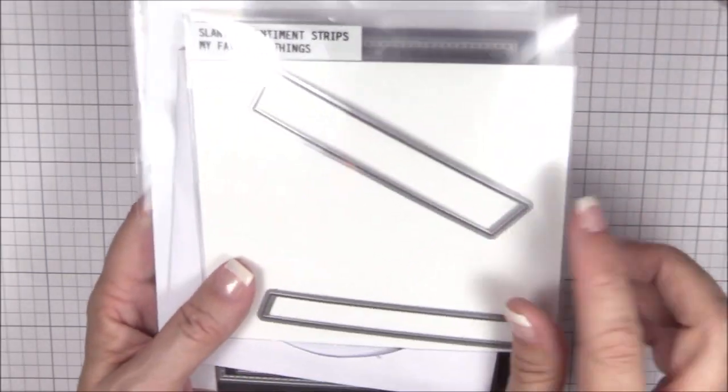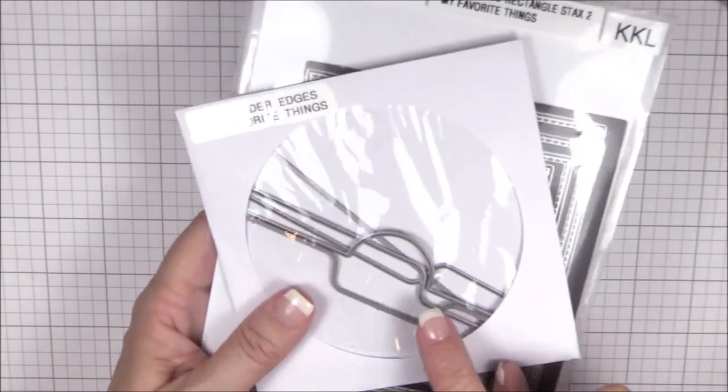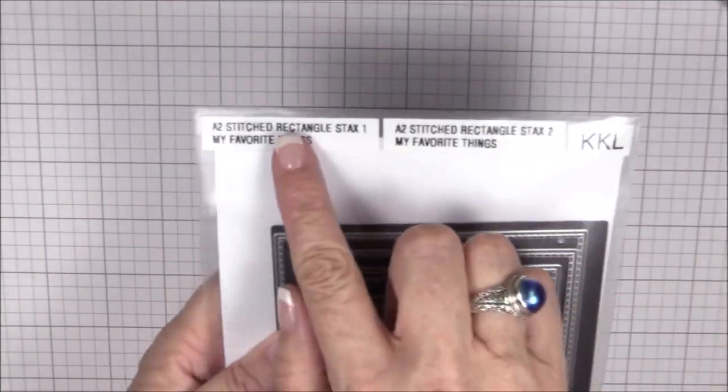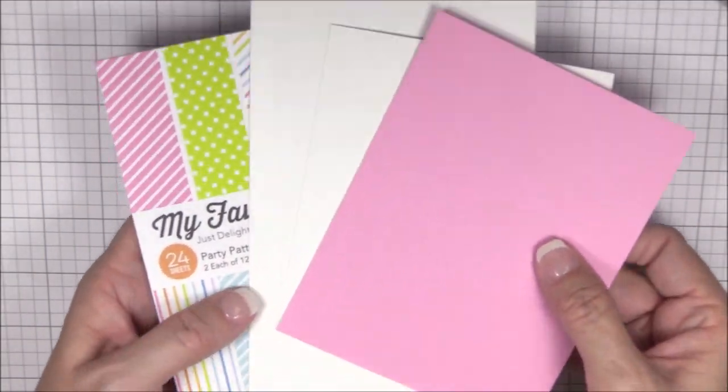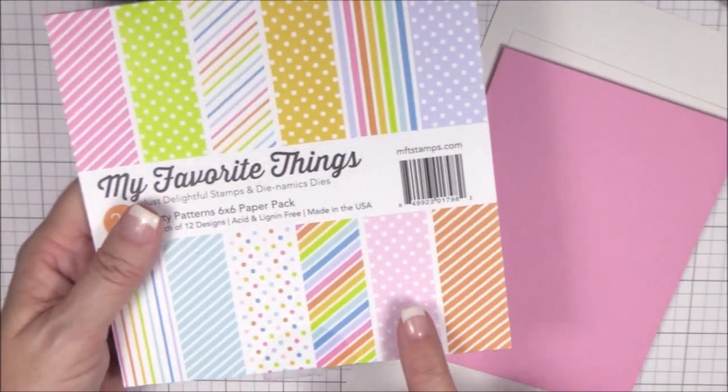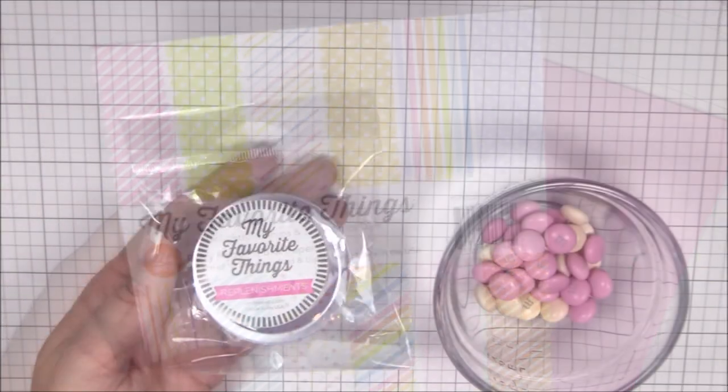The slanted sentiment strips die-namics, the file folder edges die-namics, and the a2 stitched rectangle stacks set one die-namics. I also use some cotton candy smooth white cardstock as well as the party pattern six by six paper pack.